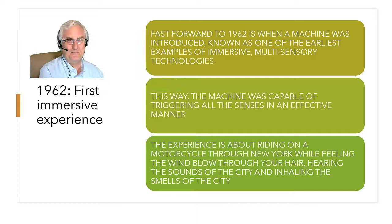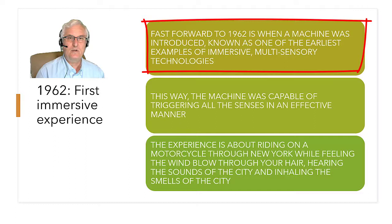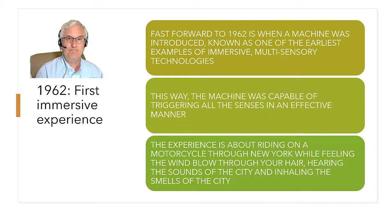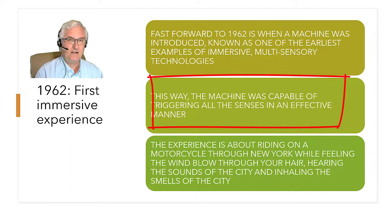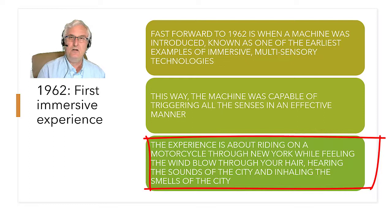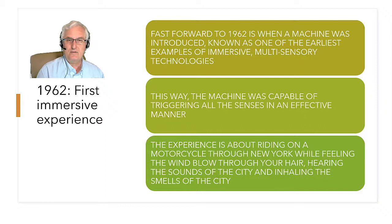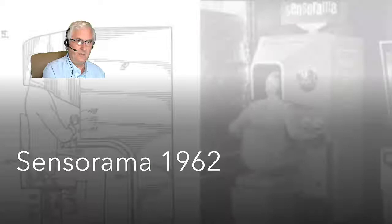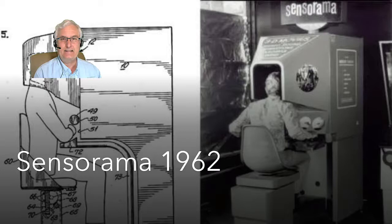In 1962 the first immersive experience happened with a machine known as one of the earliest examples of immersive multi-sensor technologies. The machine was capable of triggering all the senses — the experience was about riding on a motorcycle through New York streets while feeling the wind blowing through your hair, hearing the sounds of the city, and inhaling the smells of the city. This was the Sensorama, one of the first virtual reality machines.